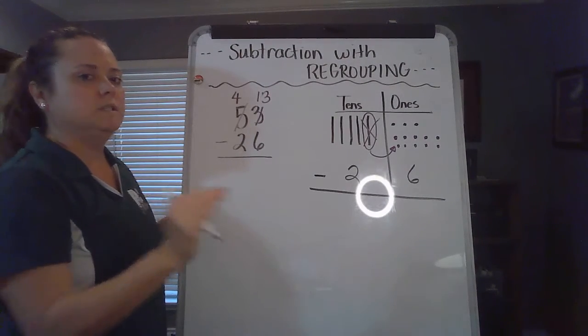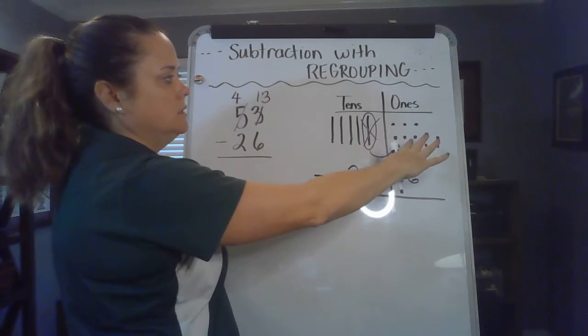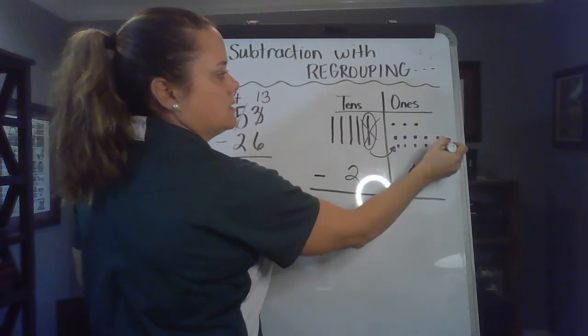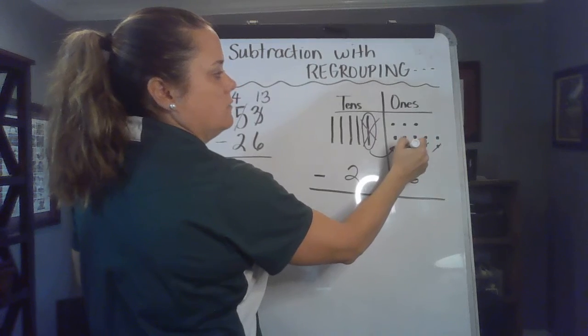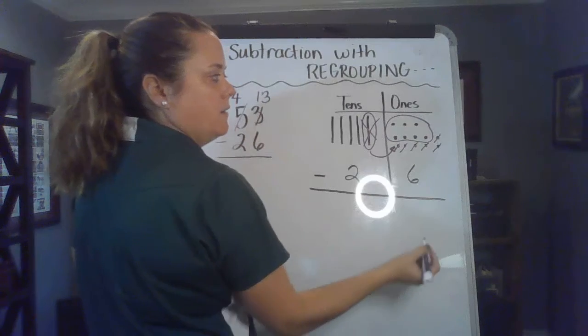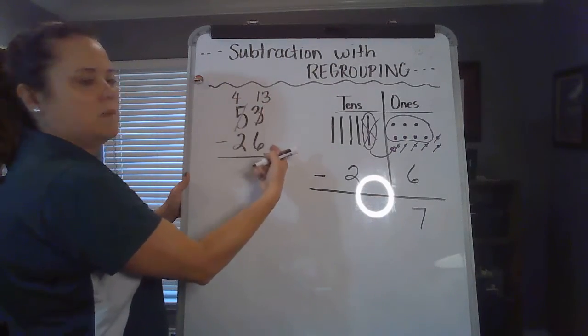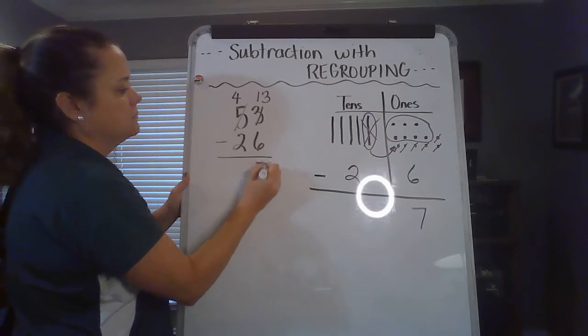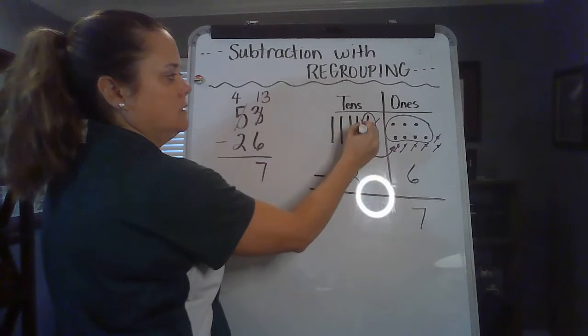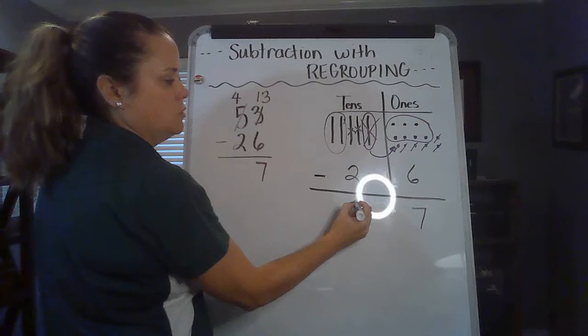All right, now we're going to physically subtract six ones from my thirteen. So let's take away six: 1, 2, 3, 4, 5, 6. And what do I have left? I have seven. Thirteen minus six is seven. And I have four tens and I take away two tens, so 1, 2, and I have two left. And four minus two is two.